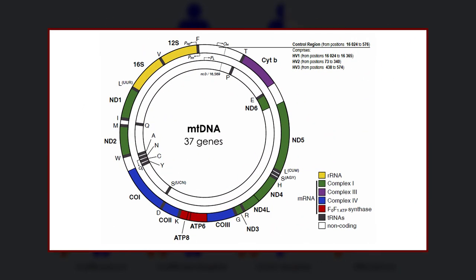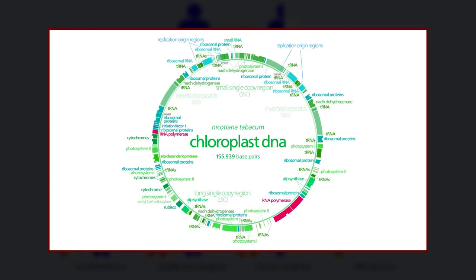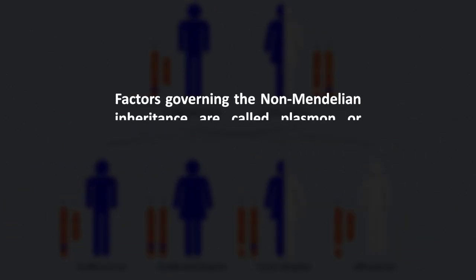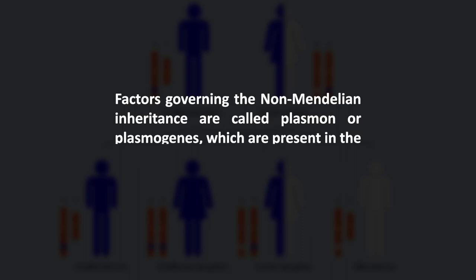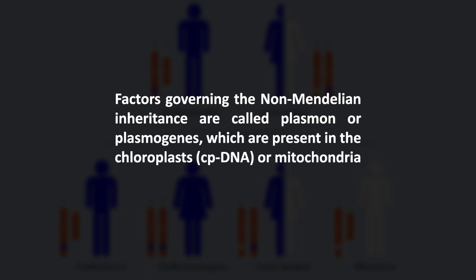The best example of non-Mendelian inheritance in animal cells is the mitochondrial genome, and in the case of plants, it is the plastid, that is the chloroplast genome. The factors governing non-Mendelian inheritance are called plasmon or plasmogenes, which are present in the chloroplast (cpDNA) or mitochondria (mtDNA). The characters inherited by plasmogenes are inherited in a uniparental fashion by the female parent only; therefore, it shows reciprocal differences in the F1 generation.